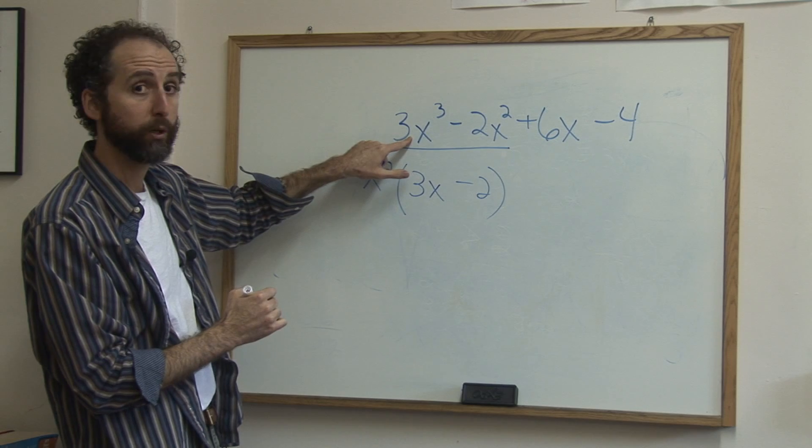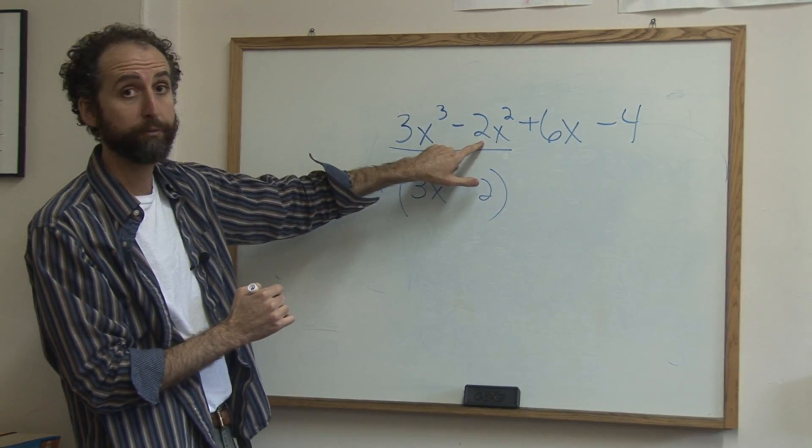Because x squared times 3x is 3x cubed. x squared times negative 2 is negative 2x squared.